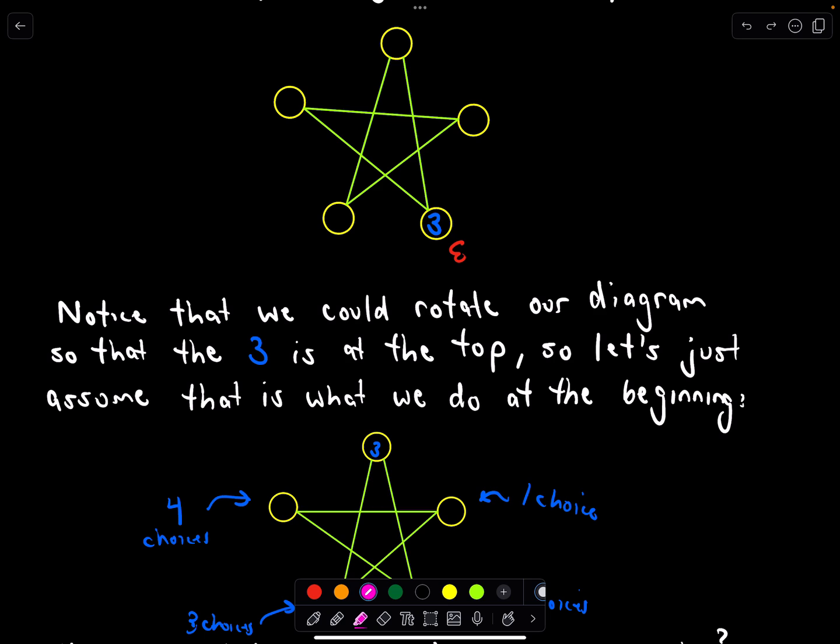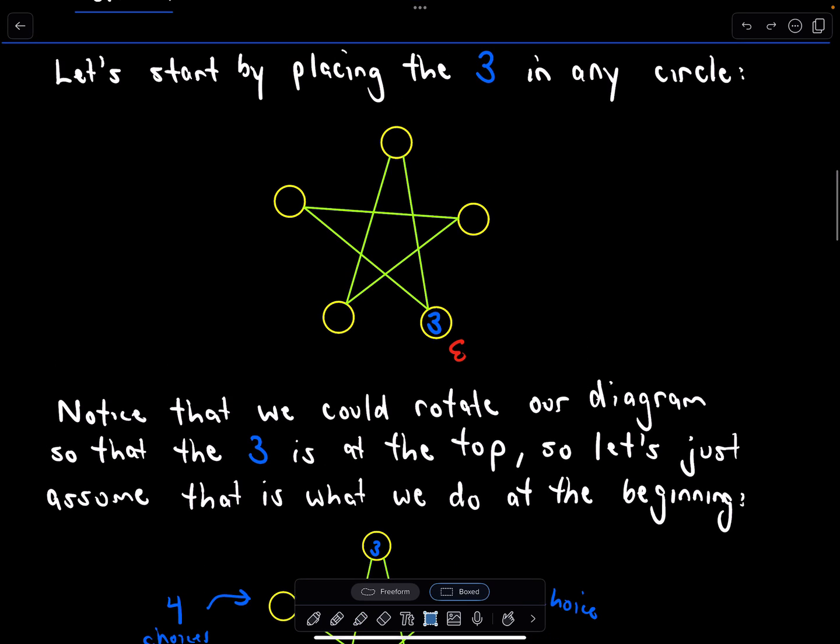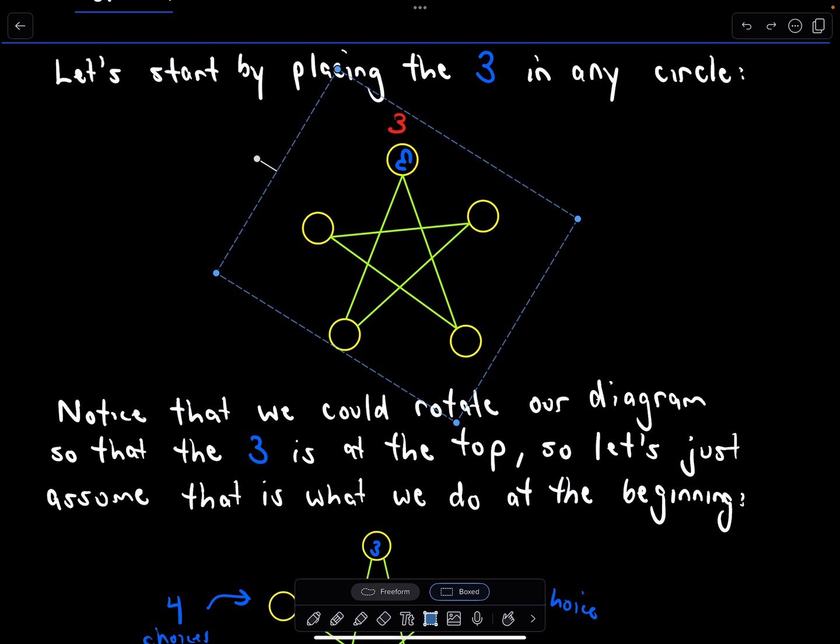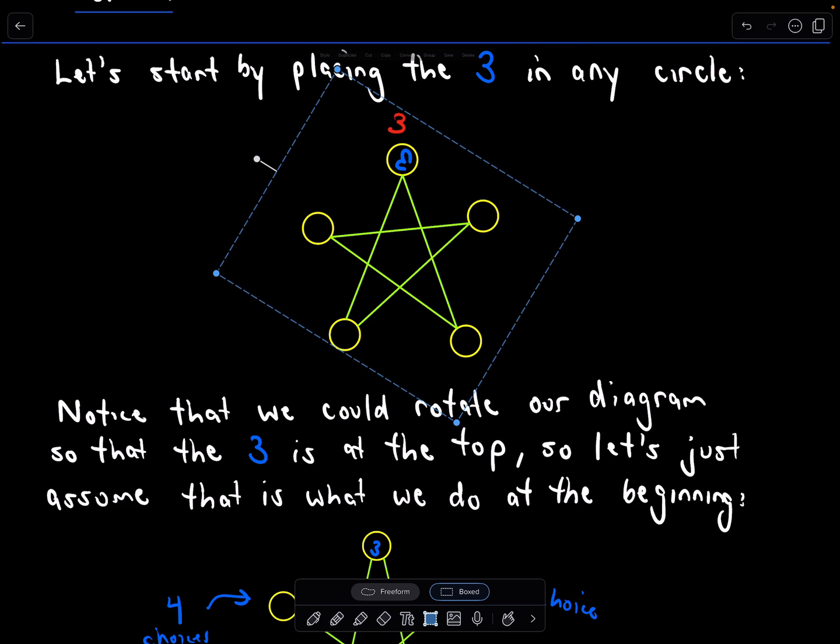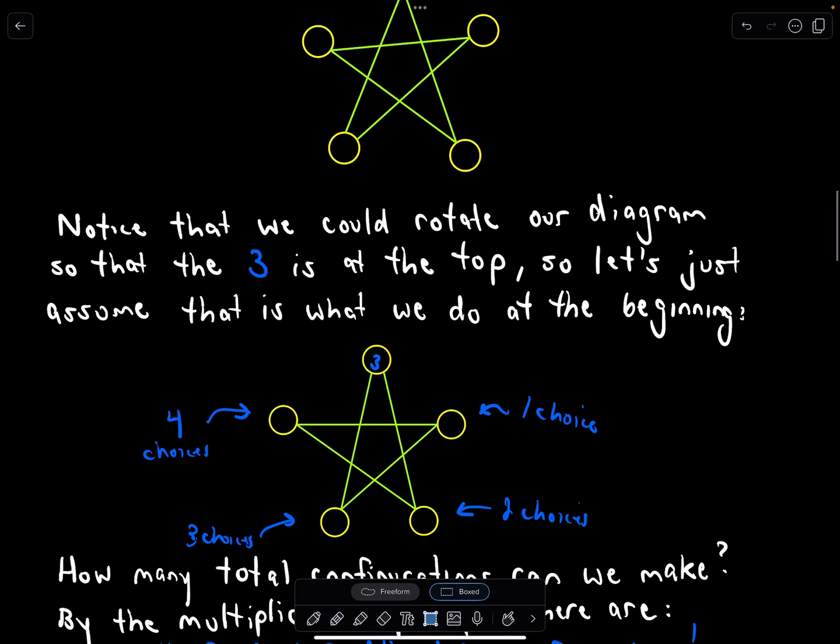Well, here's why. So I start by placing 3. The idea is we could rotate that diagram so that the 3 is at the top. By rotating that diagram, it doesn't alter any of the connections. So the idea is we could just twist our diagram so that that 3 is at the top. Let's just start off by assuming that our 3 is at the top. So the 3 is already placed, and it's sitting at the top.